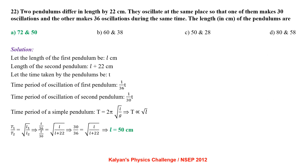Two pendulums differ in length by 22 cm. They oscillate so that one makes 30 oscillations and the other makes 36 oscillations during the same time. Let the length of the first pendulum be L cm, so the second is L+22 cm. Time period T ∝ √L. So T₁/T₂ = √(L₁/L₂), i.e. (T/36)/(T/30) = √(L/(L+22)), which gives L = 50 cm.